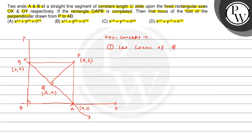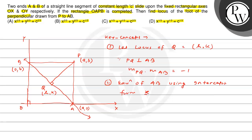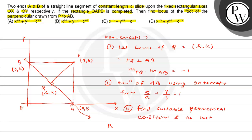Let the locus point Q have coordinates (H, K). Q is the foot of the perpendicular from P to AB. Our strategy is: first use the condition that Q lies on AB, then use the perpendicularity condition (slopes product = -1), find a suitable geometrical condition, and finally put x, y in place of H, K to get the locus.